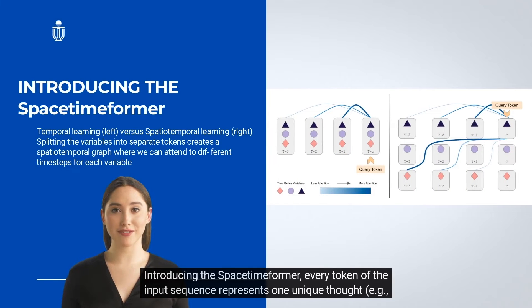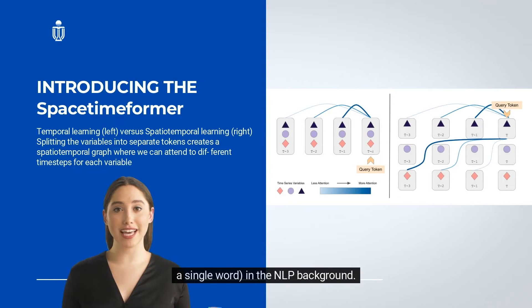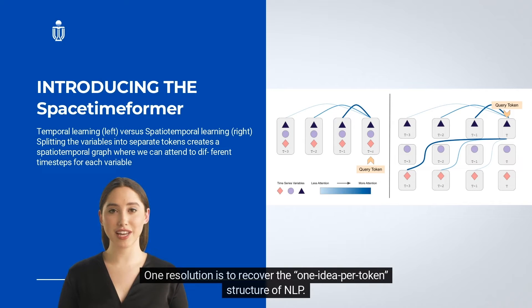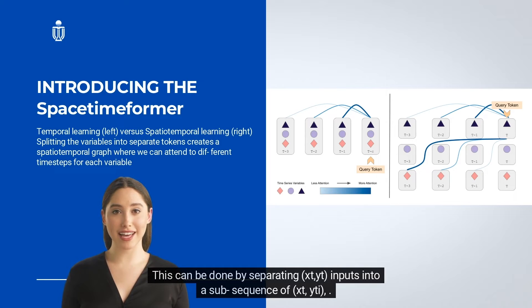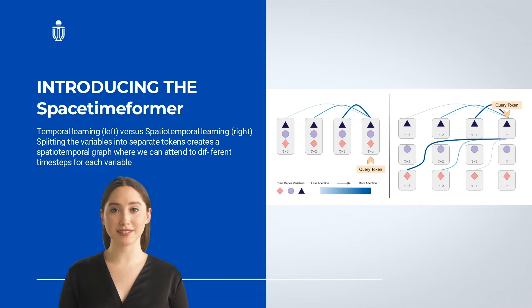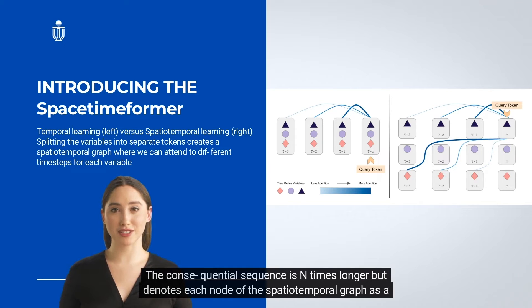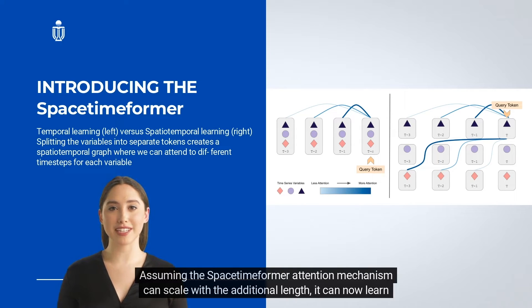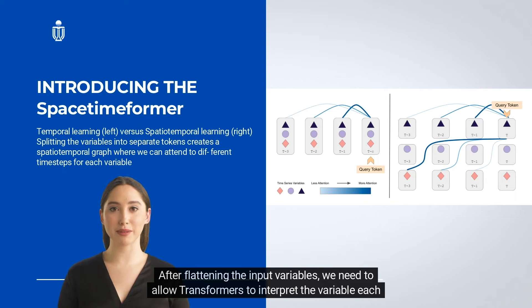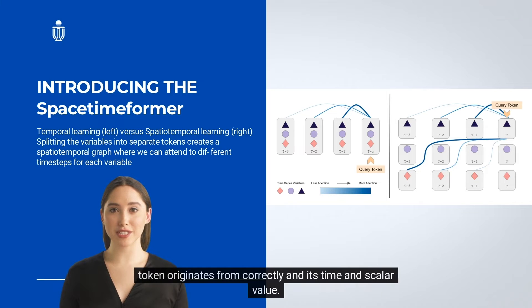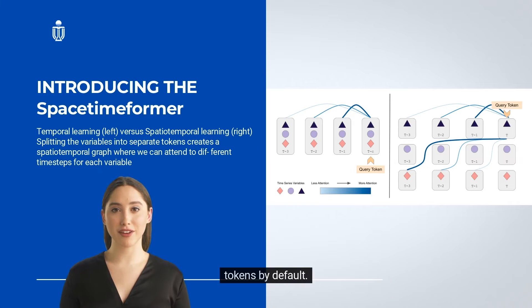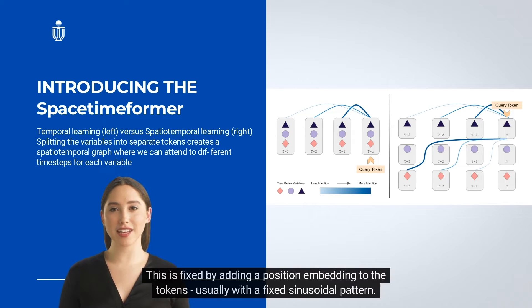Introducing the Spacetime Former: every token of the input sequence represents one unique thought — a single word in the NLP context. However, multivariate TSF models intrinsically process multiple distinct sequences per time step. The solution is to recover the one-idea-per-token structure of NLP by separating inputs into sub-sequences of individual variable tokens, where n is the number of variables. The resulting sequence is n times longer but denotes each node of the spatio-temporal graph as a unique token. Unfortunately, transformers are permutation invariant, meaning they cannot interpret the order of input tokens by default.